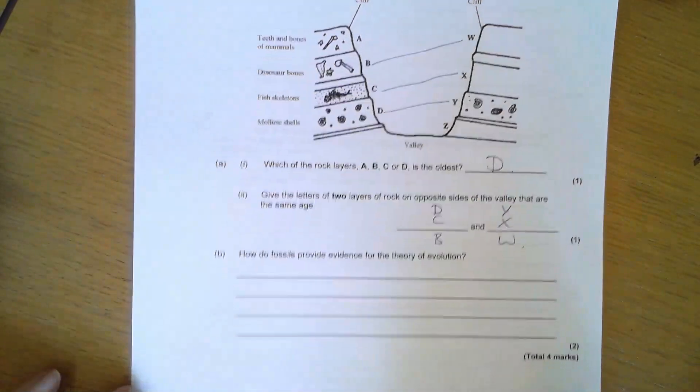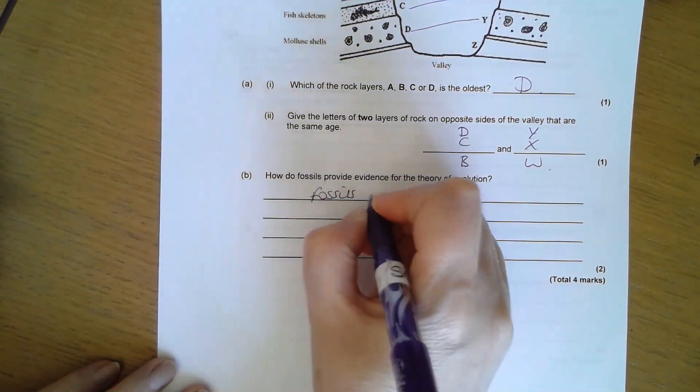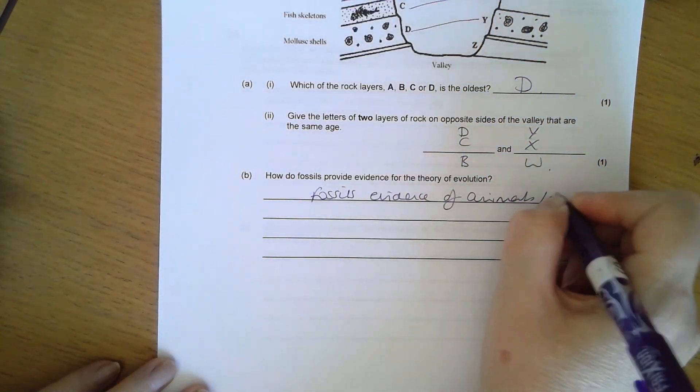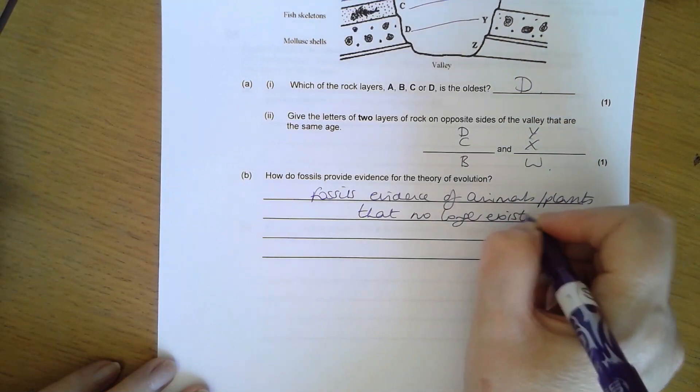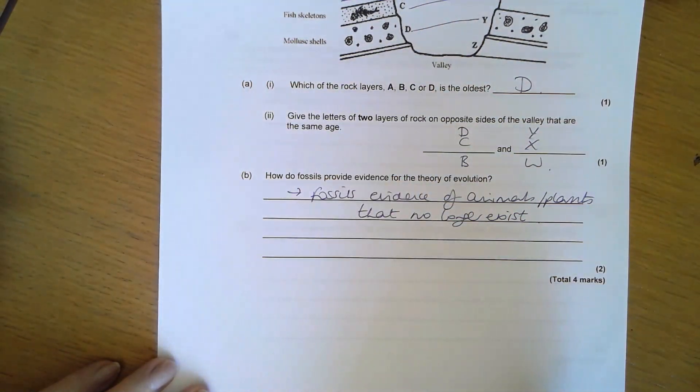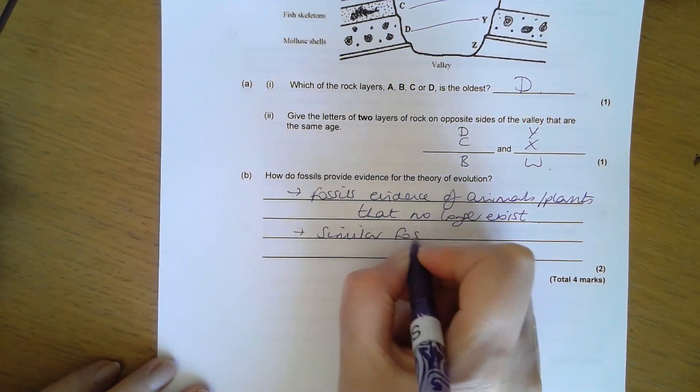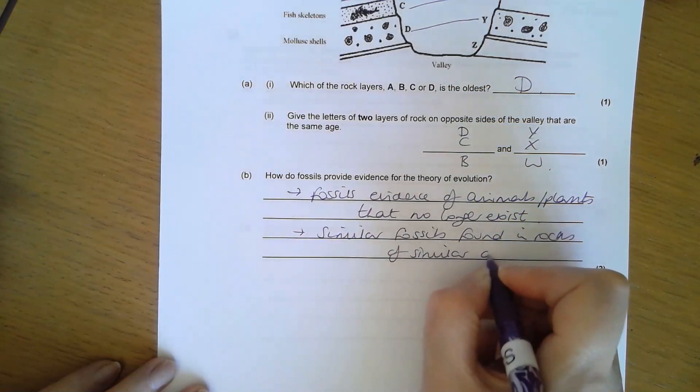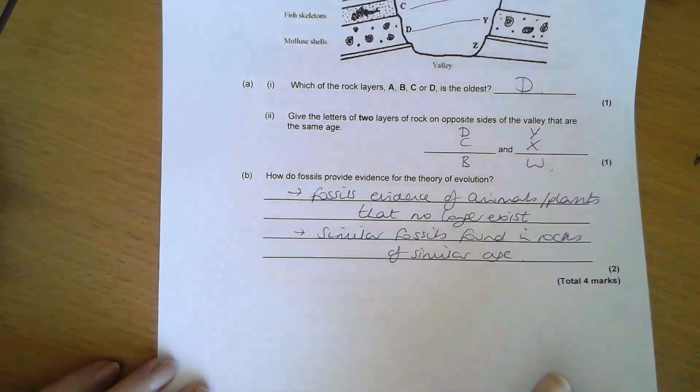Two layers of rock on opposite sides are the same age. I can see the same fossils in D and Y, so C and X, or B and W. How do fossils provide evidence for evolution? Fossils are evidence of animals and plants that no longer exist, so they provide evidence of previous plants and animals that don't exist anymore. Similar fossils are found in rocks of a similar age.